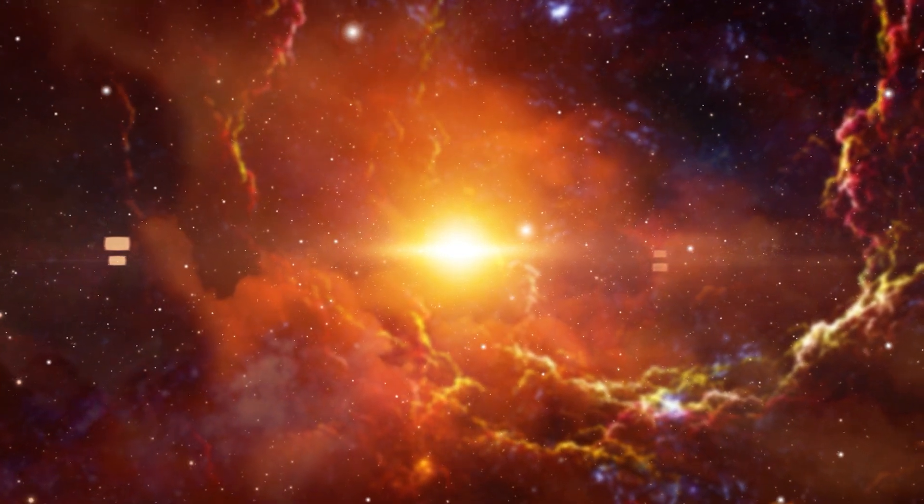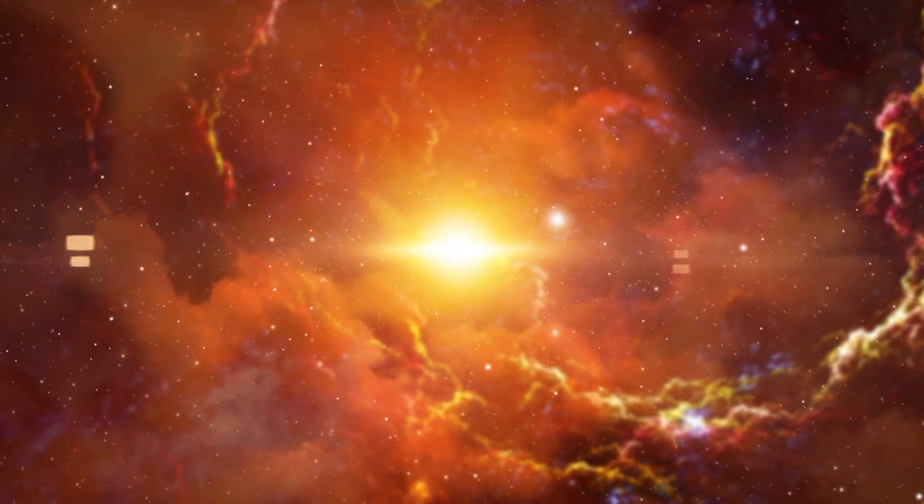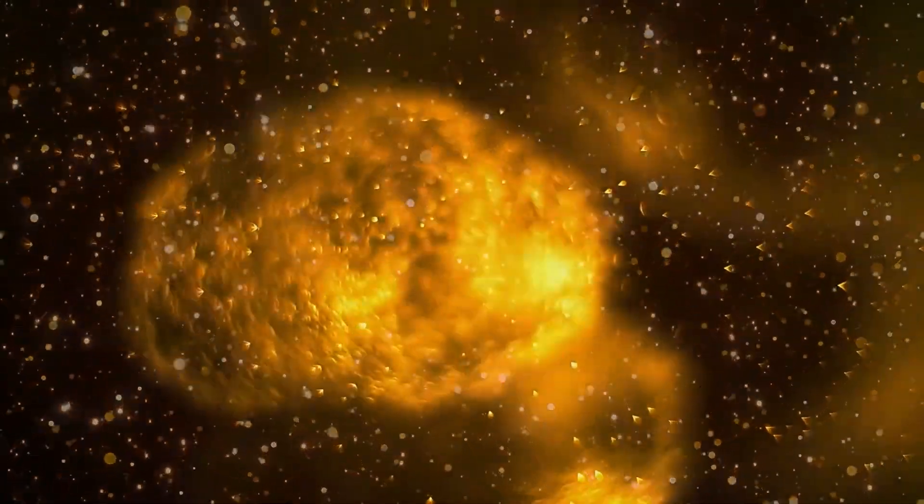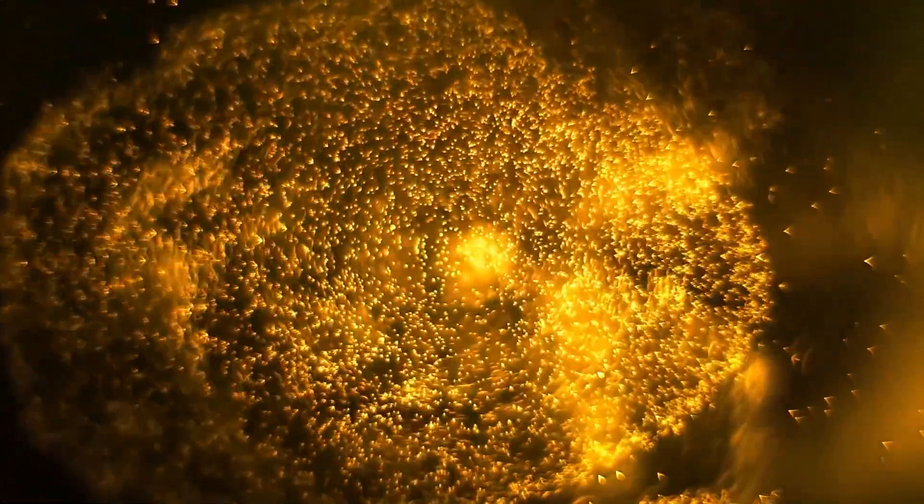In the Big Bang story we're all familiar with, regular matter like atoms was created in the early universe when space was hot and crowded. As the universe cooled and expanded, atoms began to combine into structures like galaxies and stars.